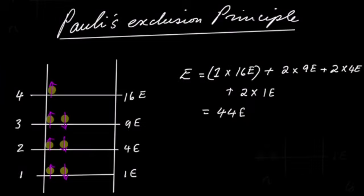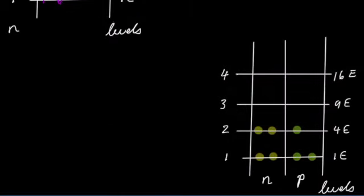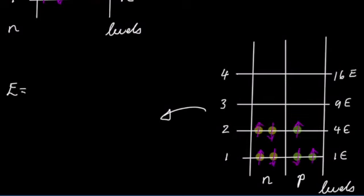If instead of the 7 neutrons, we take 4 neutrons and 3 protons, so that the total number of nucleons is still 7, this will substantially bring down the total energy of the system, because 2 protons and 2 neutrons can occupy the same energy state.